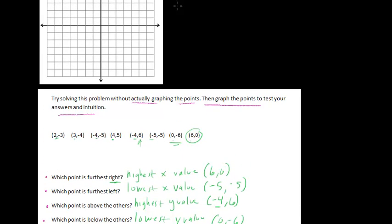So now we want to test these out. And really quickly we could do this. So let's plot our points. (2, -3). 1, 2, and then down 3. 1, 2, 3. Right? This is (2, -3).